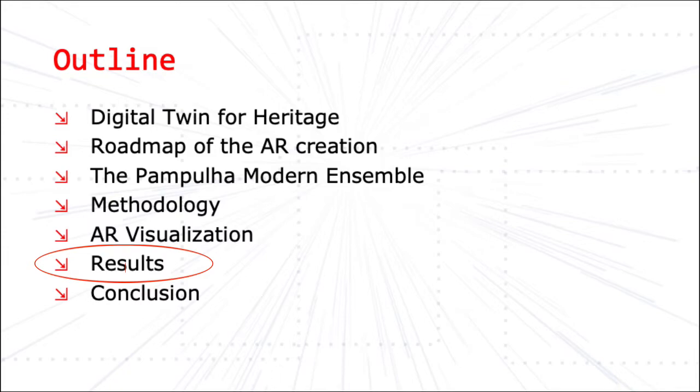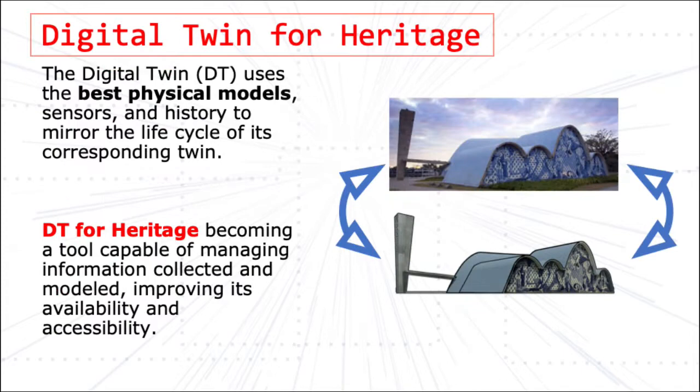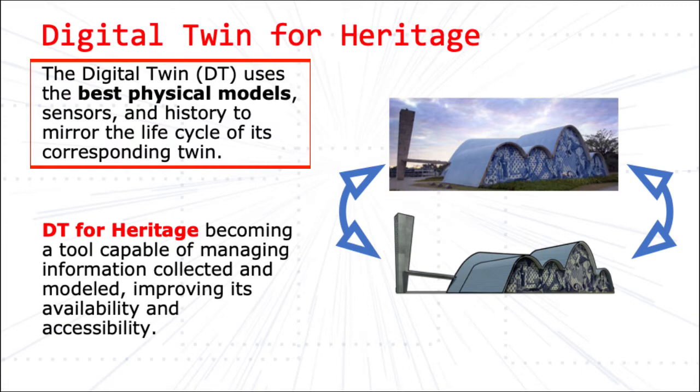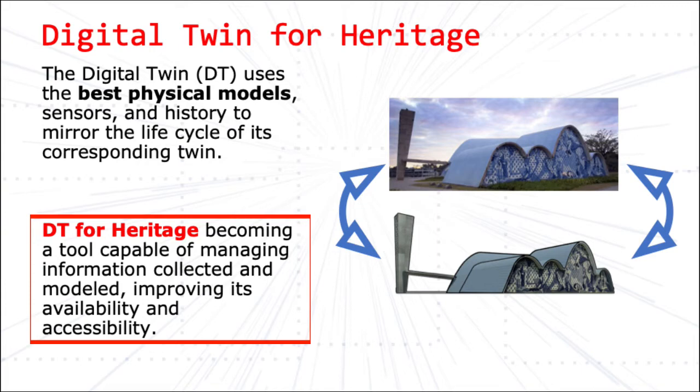The Digital Twin, or DT, uses the best physical models, sensors, and history to mirror the life cycle of its corresponding real-life model. The Digital Twin is a tool capable of managing and modeling collected information, and is in large use in the field of heritage interpretation, since it improves the availability and accessibility of the model.